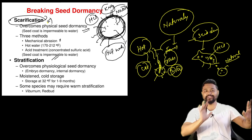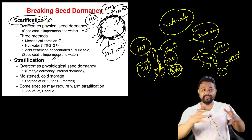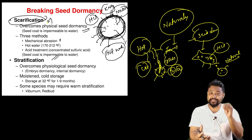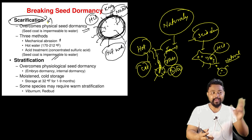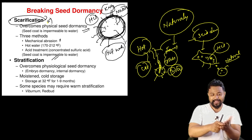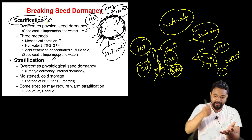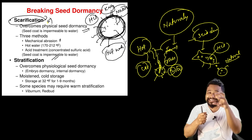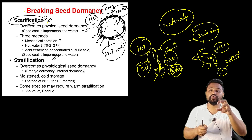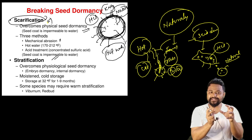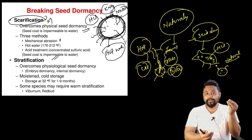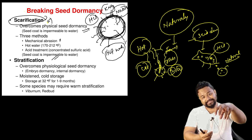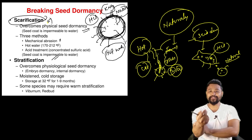It is a natural process. Artificially, in lab conditions, we can break seed dormancy. We can use a knife or hammer on the seed coat, or soak seeds in water. Chemical treatments like HCl, NaOH, and hot water treatment can also affect the embryo environment to break dormancy.